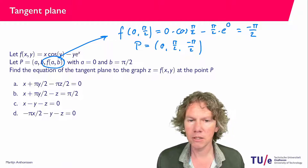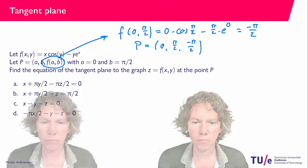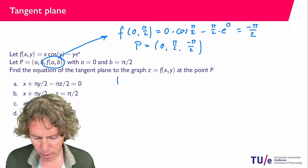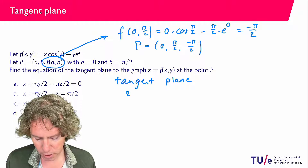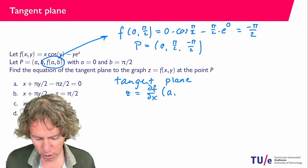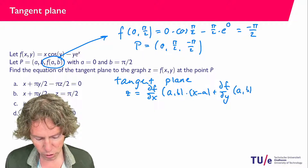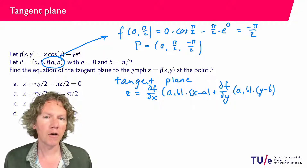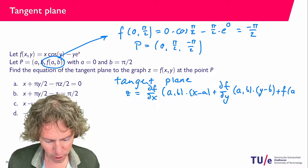Now what we are being asked is the tangent plane. The general equation for the tangent plane of a function is z equals df/dx evaluated at (a, b) times (x minus a), plus df/dy evaluated at (a, b) times (y minus b), plus f(a, b). So we still need to compute these partial derivatives.